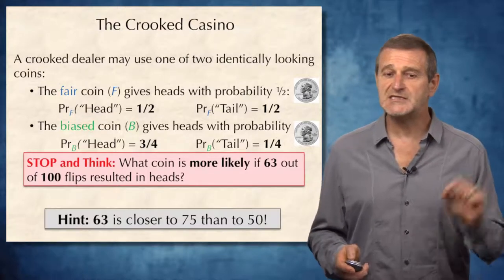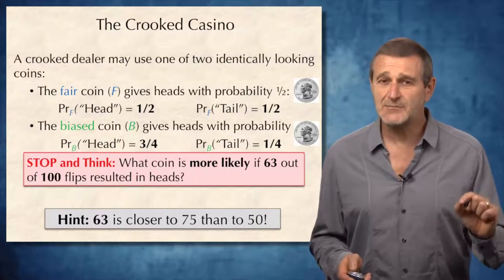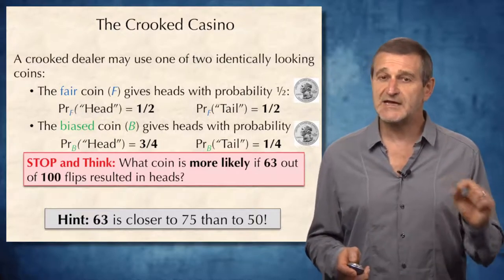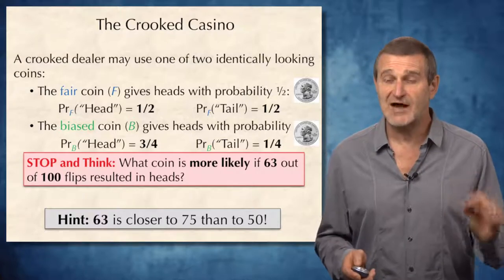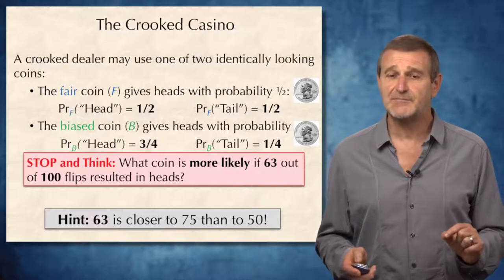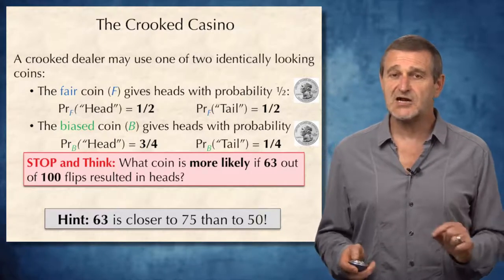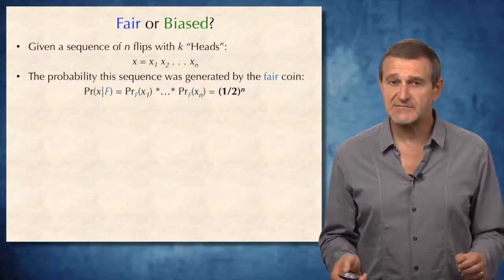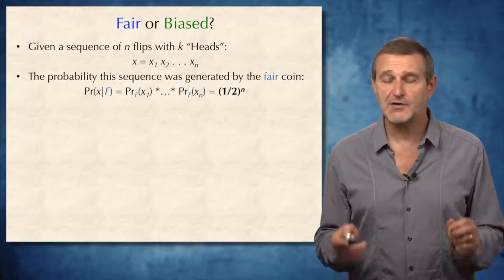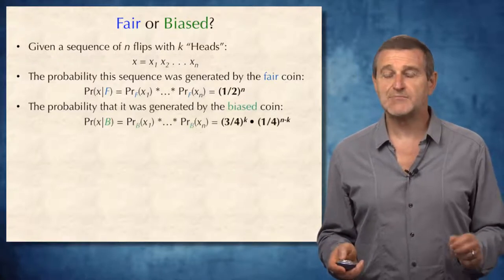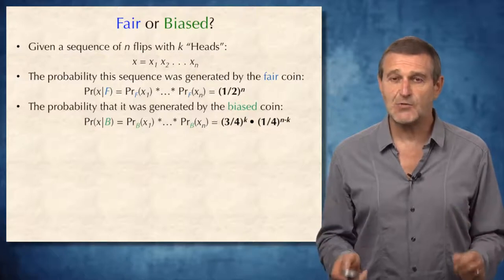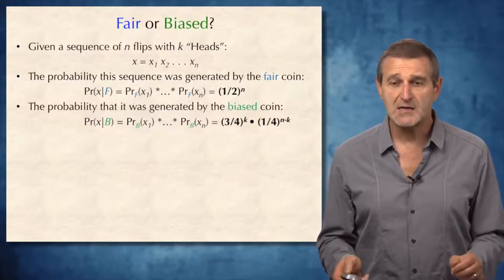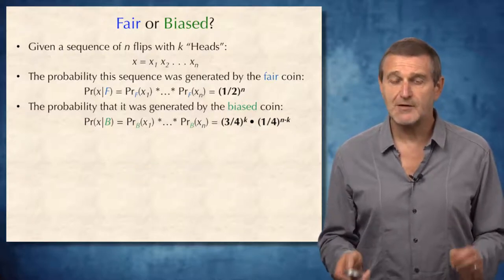How do we answer this question? Note that 63 is a little closer to 75 than to 50, so should we assume the biased coin is more likely? Before coming to that conclusion, let's estimate some probabilities. For a sequence of n flips with k heads, the probability the sequence was generated by the fair coin is (1/2)^n, and the probability it was generated by the biased coin is (3/4)^k multiplied by (1/4)^(n−k).